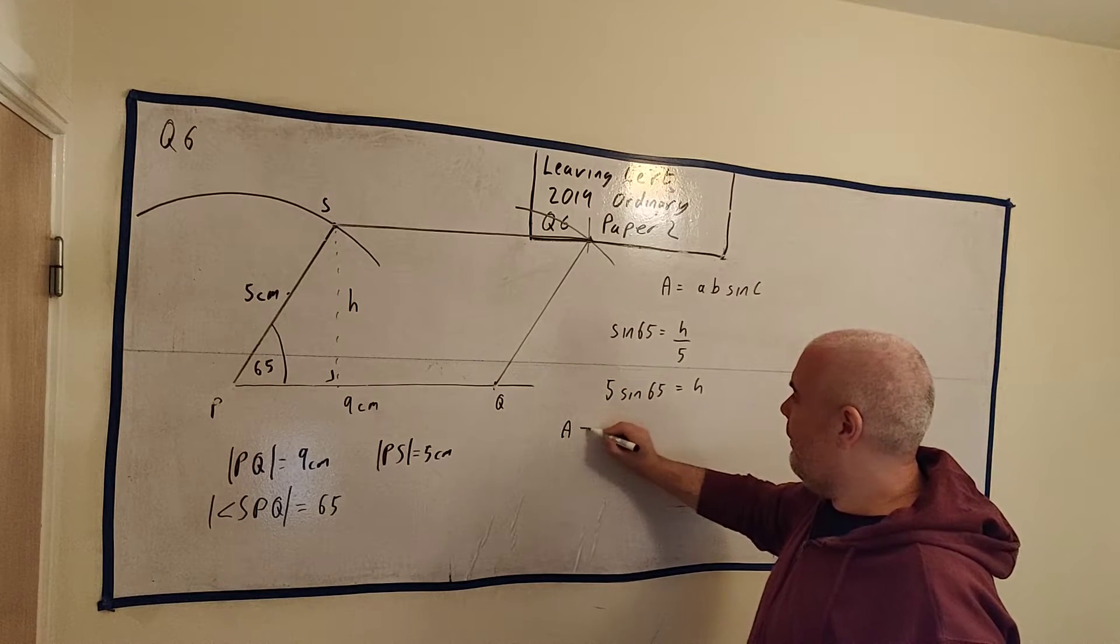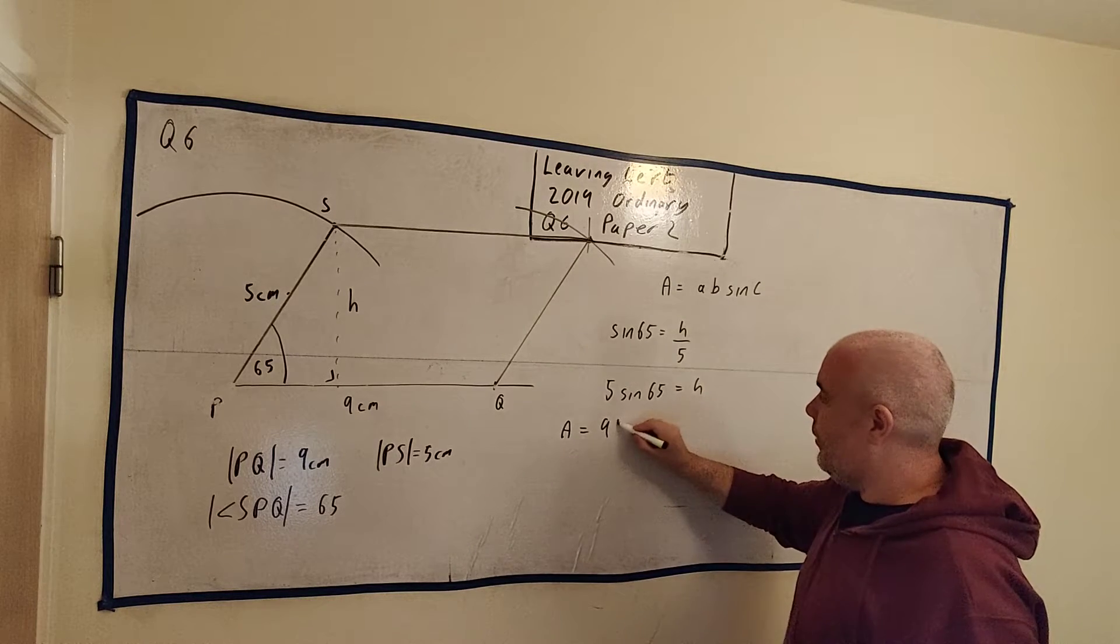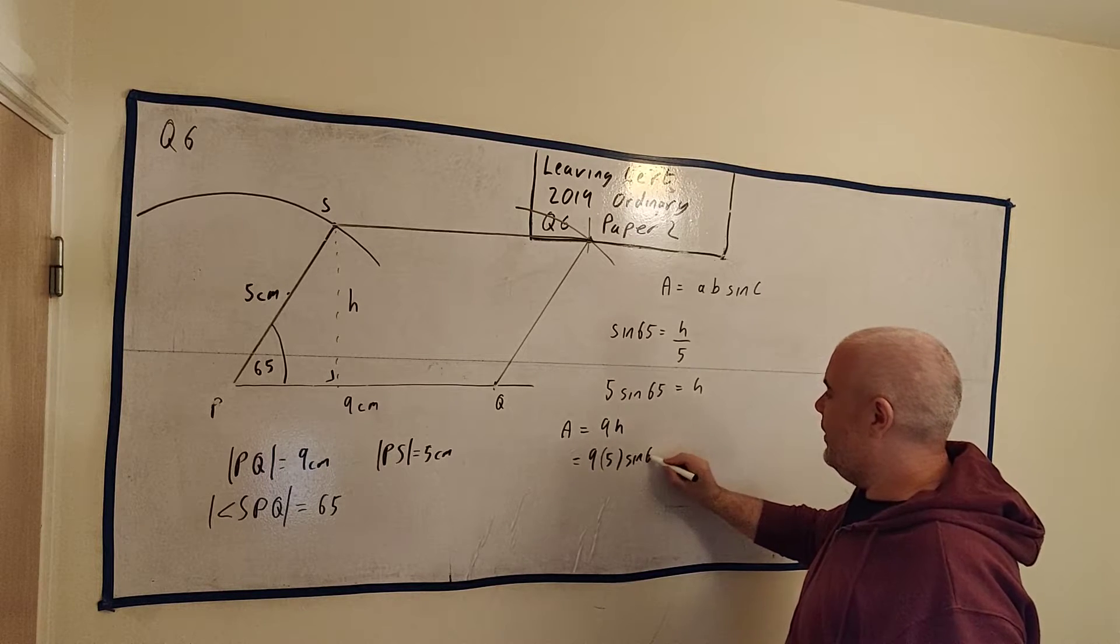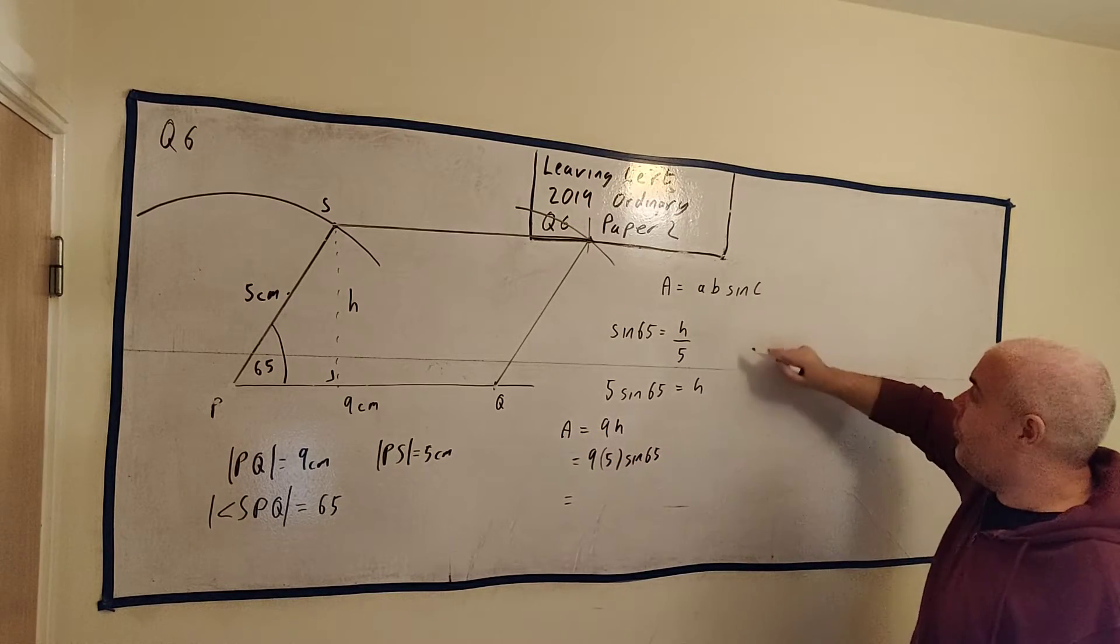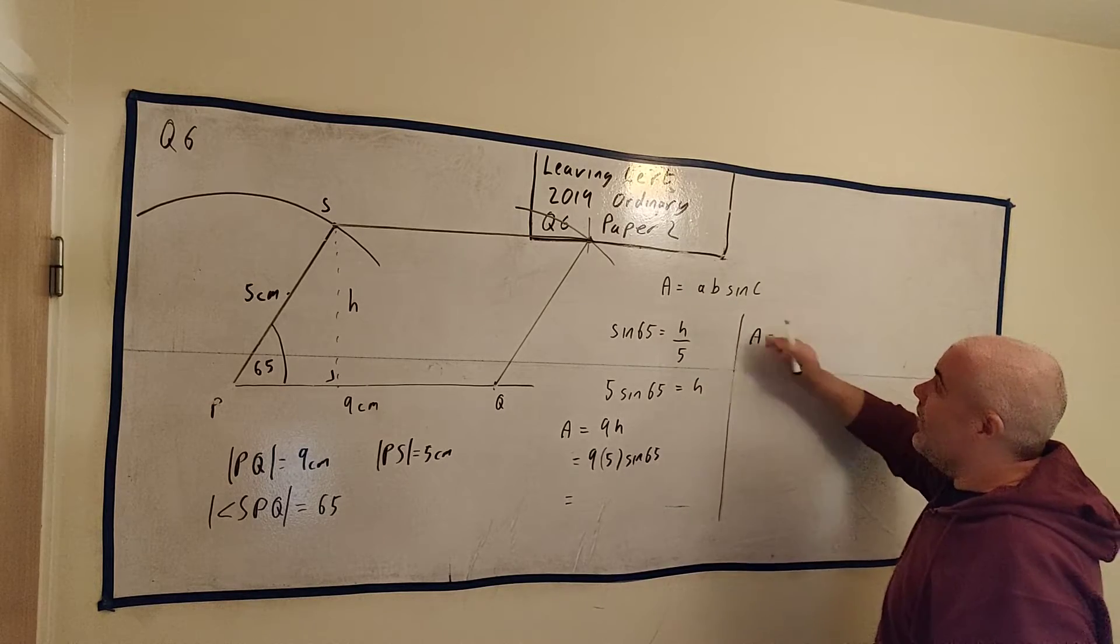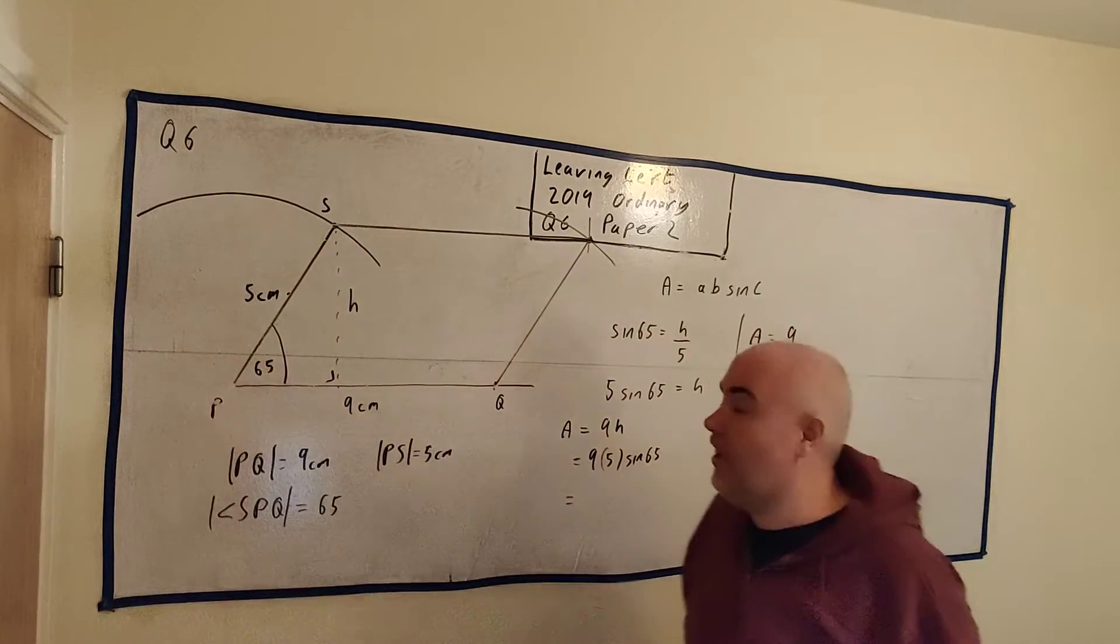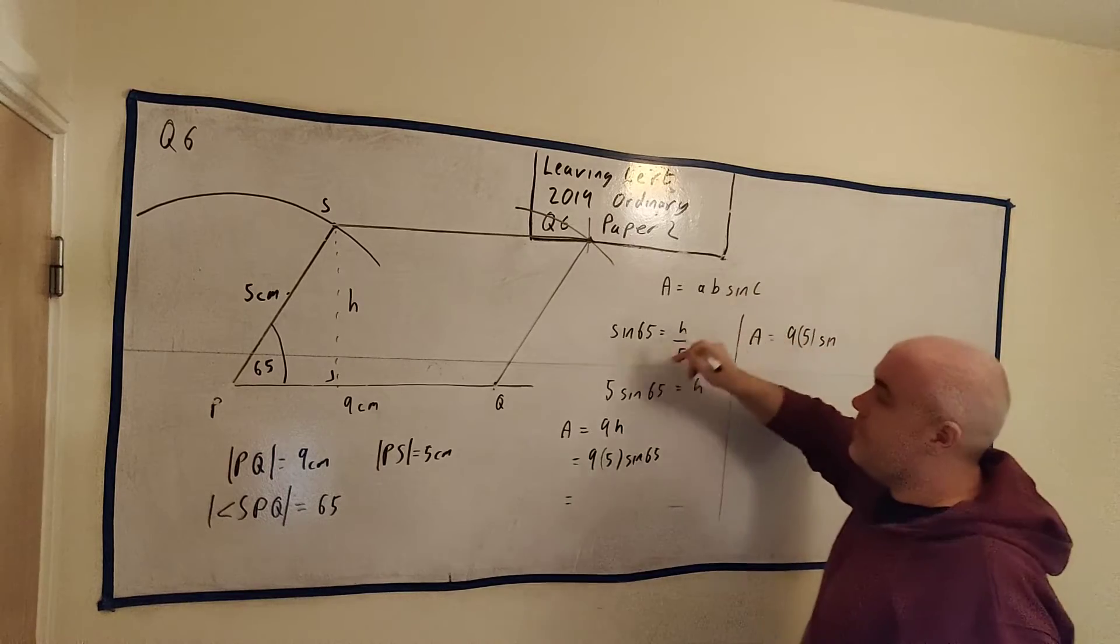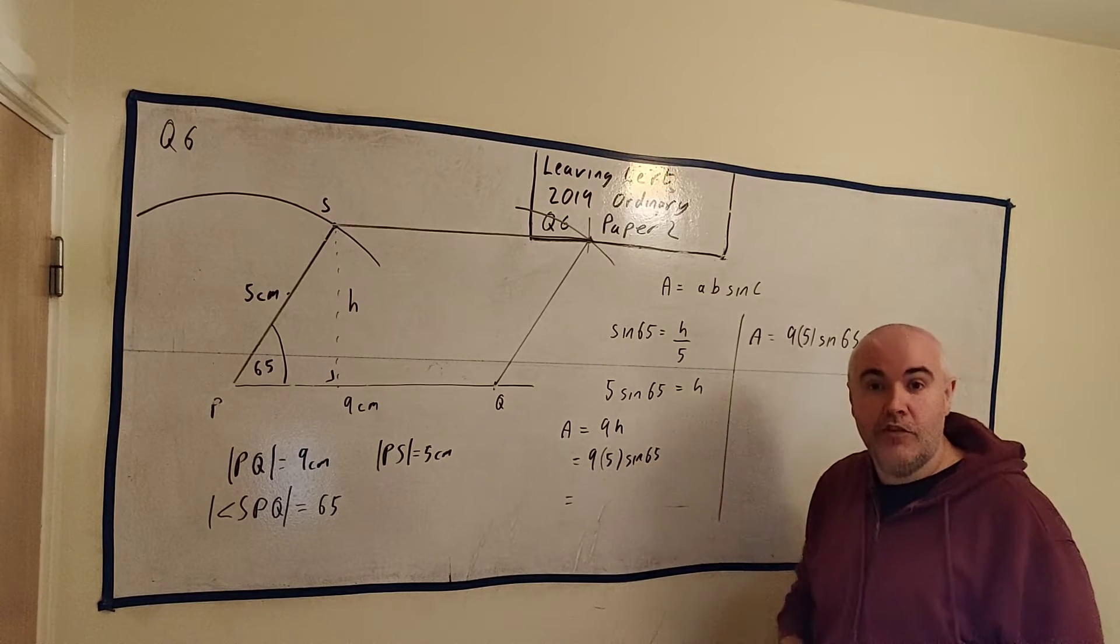Sine 65 is equal to h divided by 5. Multiply both sides by 5, I get 5 sine 65 is equal to h. And then the area of a parallelogram is equal to the base, which is 9, multiplied by the height, which is 9 times 5 times sine 65. I've just actually answered the question. This is the full marks if you use the formula that they gave you in the formula book.